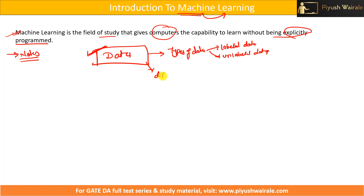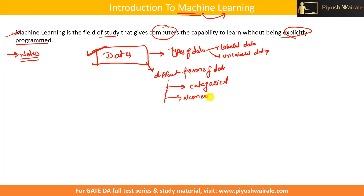Then we have different forms of data. In that, we have categorical data, we have numerical data, and we have ordinal data. What is categorical data, numerical data, ordinal data — all these things are given in the course notes. Simply go through them because we don't have time to discuss these topics in detail. They are basic things. If you just go through those notes, that will be enough for this machine learning course.